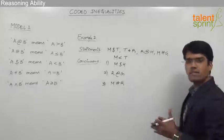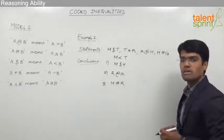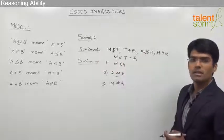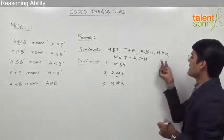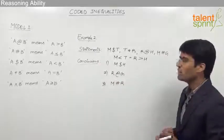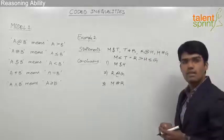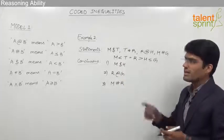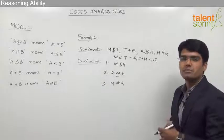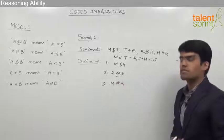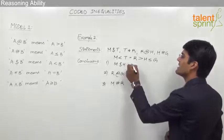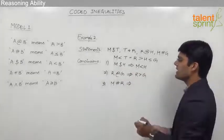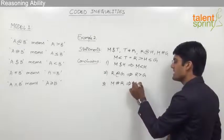Instead of writing statements separately and then combining, we can directly merge all variables. The three conclusions are: M $ H (M < H), R @ G (R > G), and M # R (M ≤ R). Now we check each conclusion.